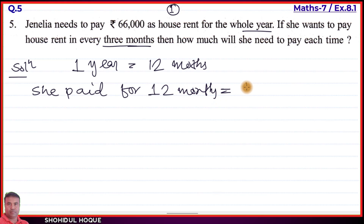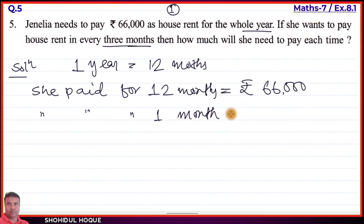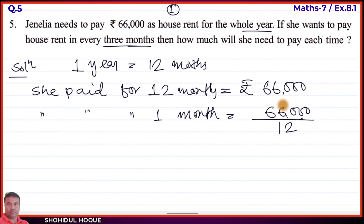So 12 months equals one year, and she paid rupees 66,000. Using the unitary method, the rent for one month equals 66,000 divided by 12. Calculating: 66,000 divided by 12 equals 5,500.